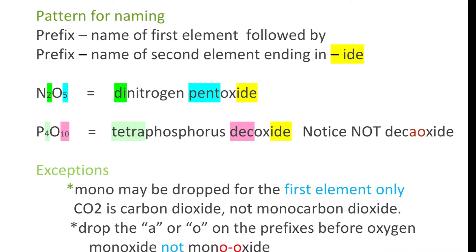There's a pattern for naming covalent compounds. In the pattern for naming, you name how many of an atom, that's your prefix with the first element, followed by how many of the second one, prefix, and then you end in -ide. For example, N2O5: N2, the 2 is di, the 5 is pent, so it's going to be dinitrogen pent, and instead of saying oxygen you give it an -ide ending, dinitrogen pentoxide.